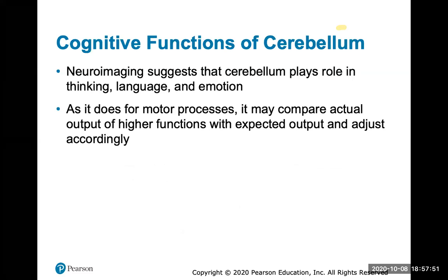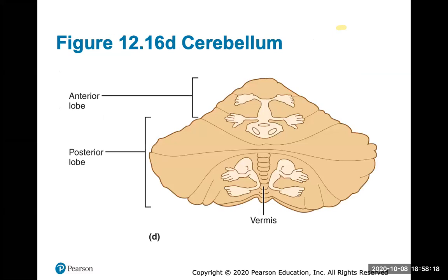Neuroimaging of the cerebellum shows it also plays a role in thinking, language, and emotion — not just motor processes. It may compare the actual output of higher functions with the expected output and adjust accordingly. Think of the cerebellum as the brain's brain — it takes what the cerebrum tells it to do and adjusts it so everything happens as it should. Different lobes of the cerebellum control different parts of the body in terms of motor movement.